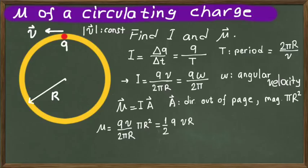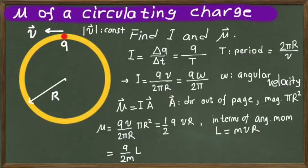In general, it's conventional to denote any circulating charge's magnetic moment in terms of its angular momentum. For circular motion, the angular momentum is L = mvr. Substituting this into the expression, we get the magnetic moment as μ = (q/2m)L.